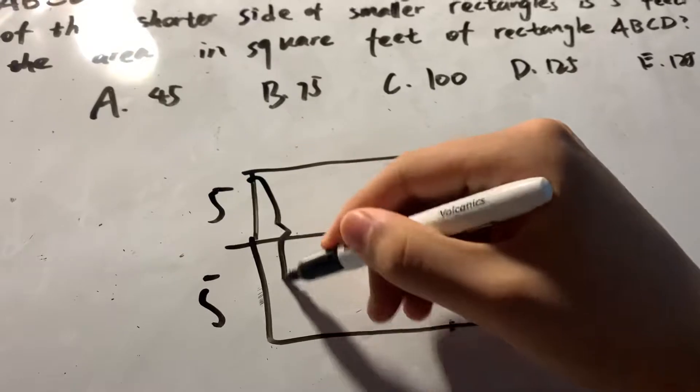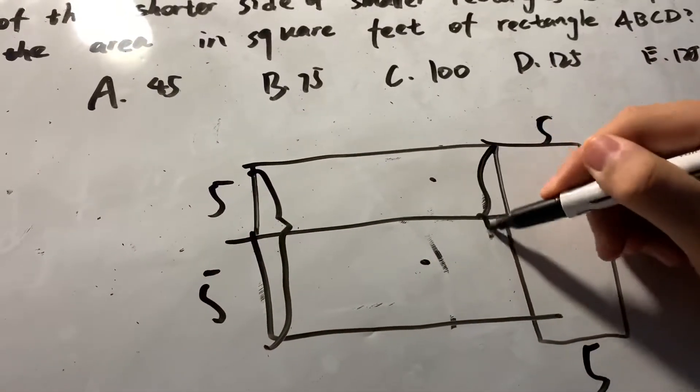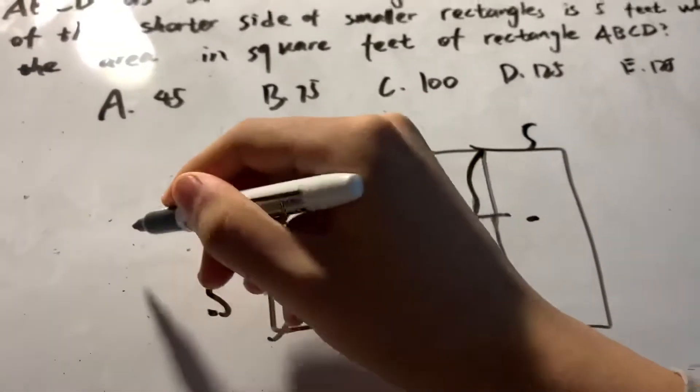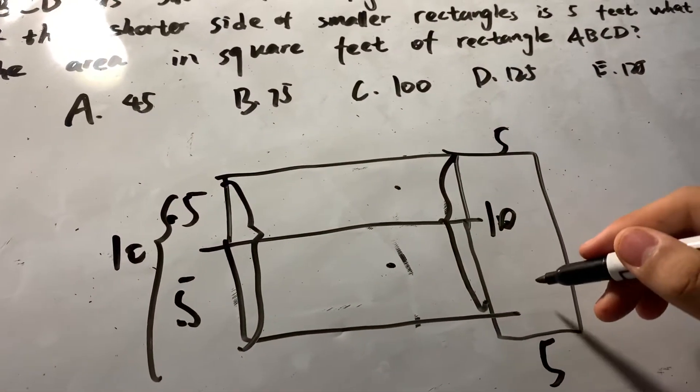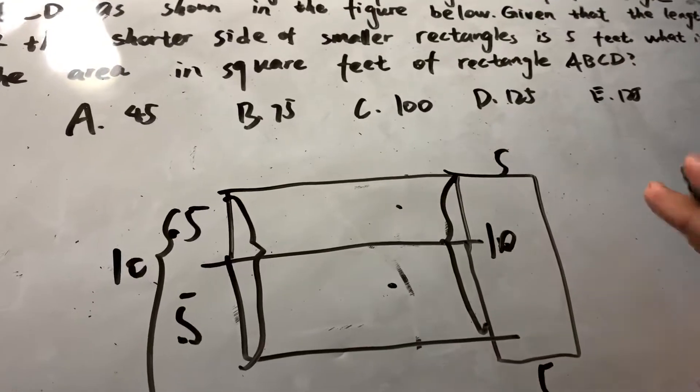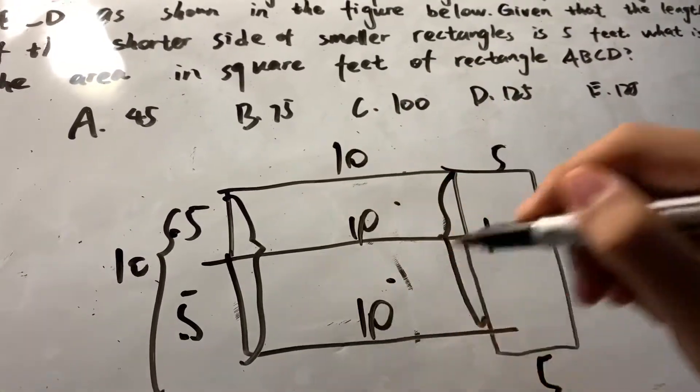And comparing here, you can see that those two are identical, right? So this plus this is equivalent to 10. Therefore, this one is also equivalent to 10. So we know that the shorter side is 5 and the longer side is 10, and then we can just label all the rest.